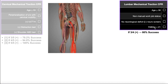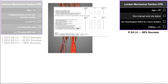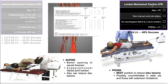The fourth criterion is the FABQW — the Fear Avoidance Beliefs Questionnaire, specifically the work component. The FABQ has two components: the physical activity component and the work component, which is a bit longer. We want the FABQW score to be less than 21; if it is, that favors mechanical traction of the lumbar spine. If any three out of four of these criteria are positive, that gives an 80% success rate for using lumbar mechanical traction to treat low back pain.